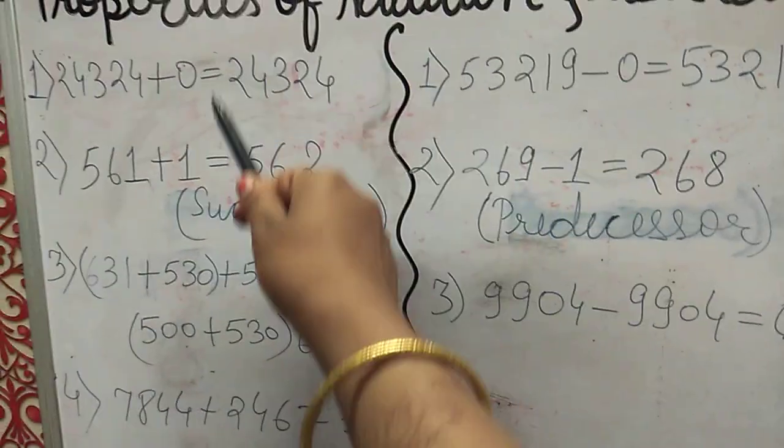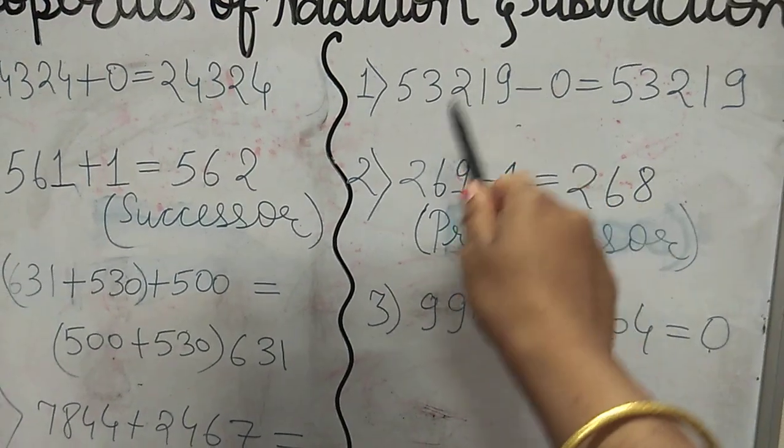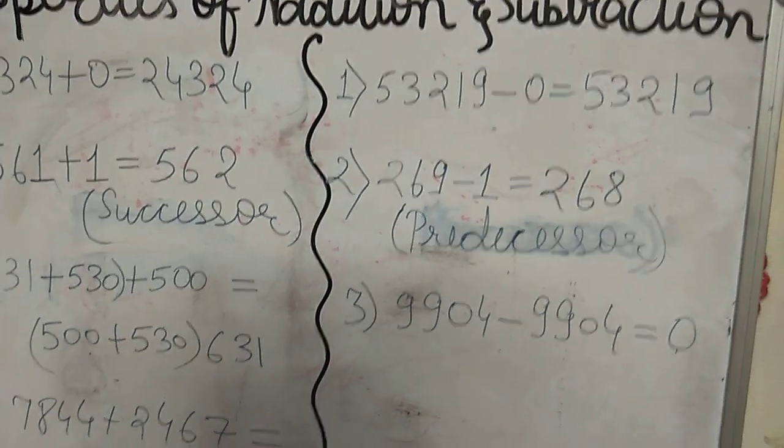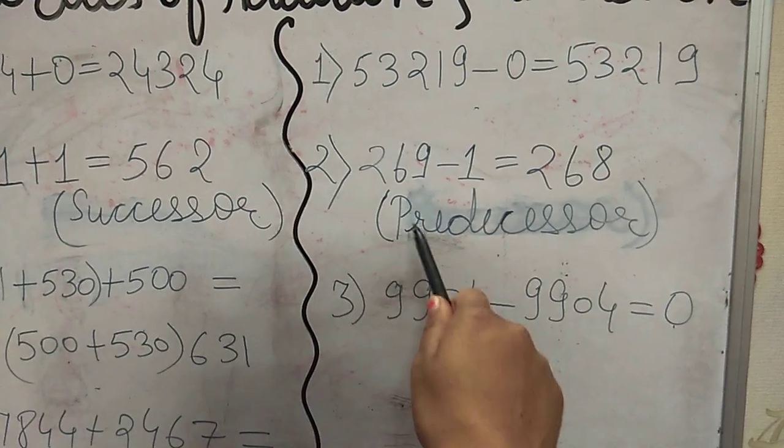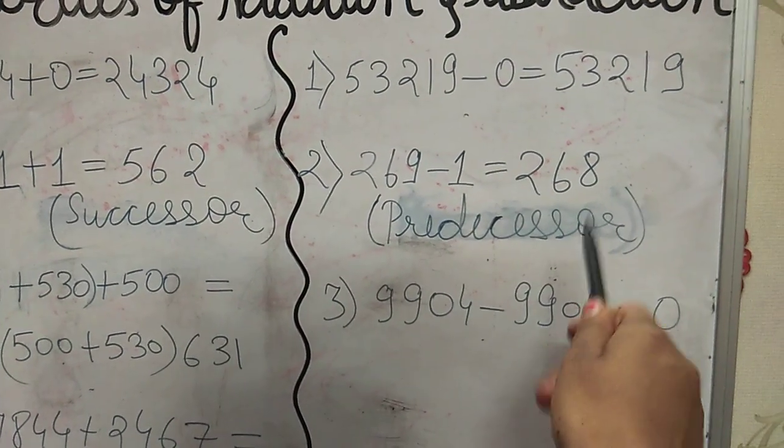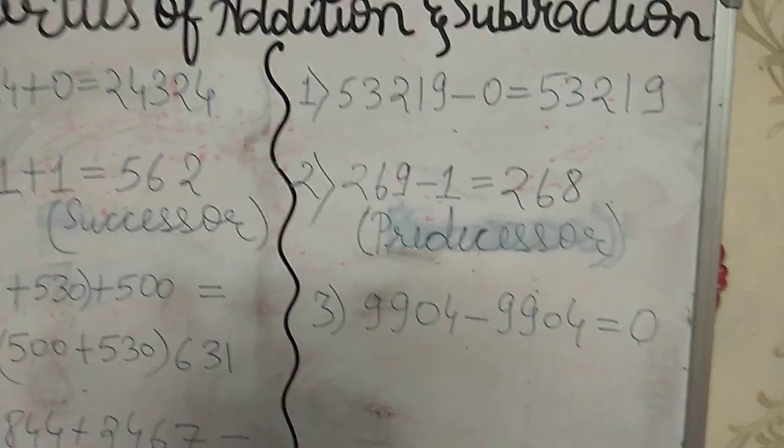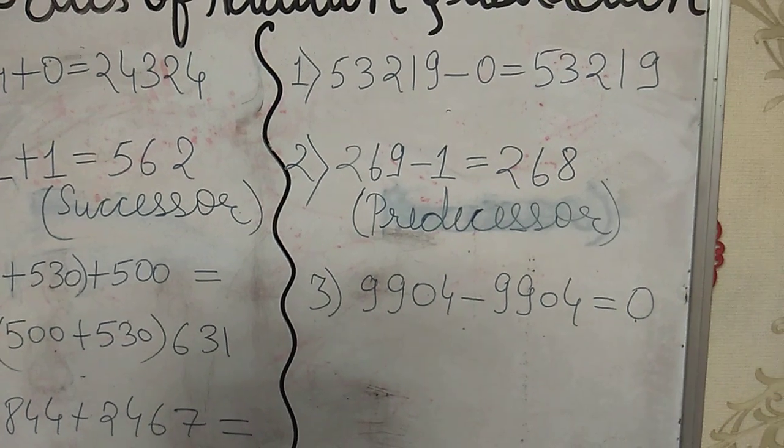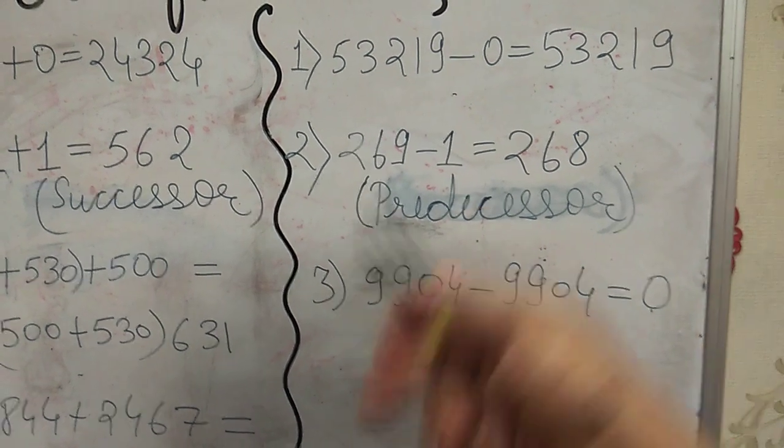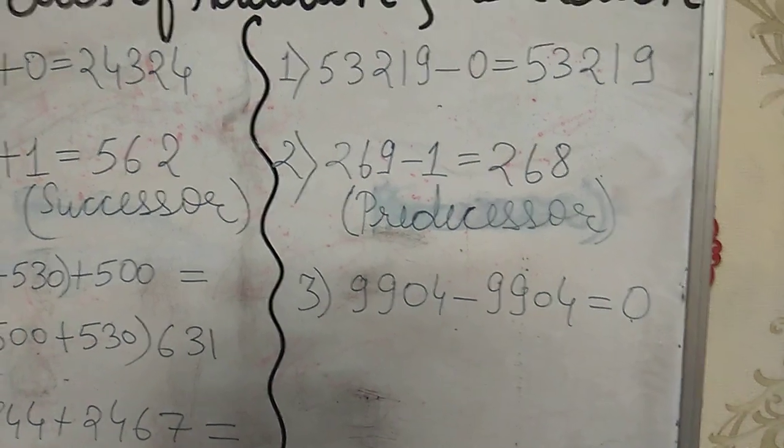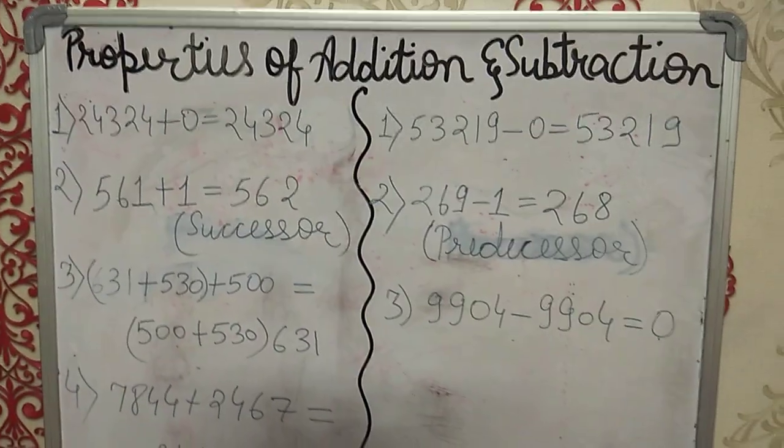Likewise addition, if we subtract 0 from any number, we will get the same number. No change will be there. Second, if we subtract 1 from any number, we will get its predecessor. Predecessor means the number before that number. Then third property: if we subtract the number from the number itself, we will get zero.